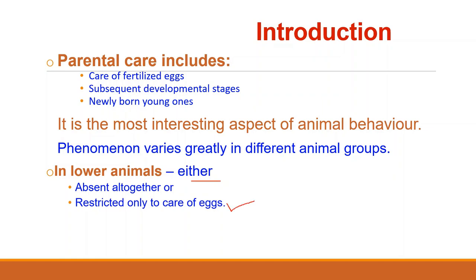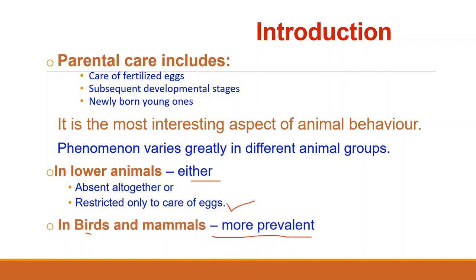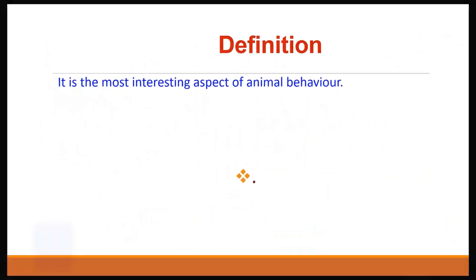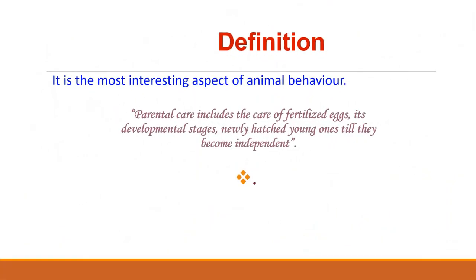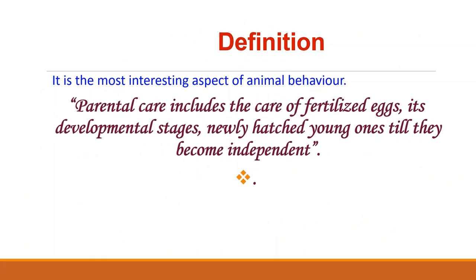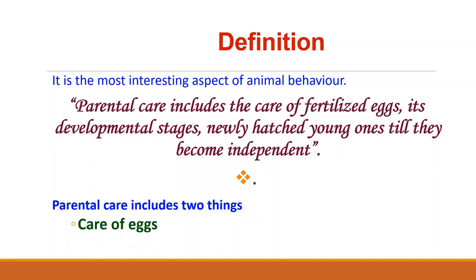However, parental care is more prevalent in higher vertebrates, particularly in birds and mammals. Therefore, parental care can be defined as the care of fertilized eggs, its developmental stages, and newly hatched young ones till they become independent. A careful look at the definition reveals that parental care includes two things: one is care of eggs and the other is care of young ones.